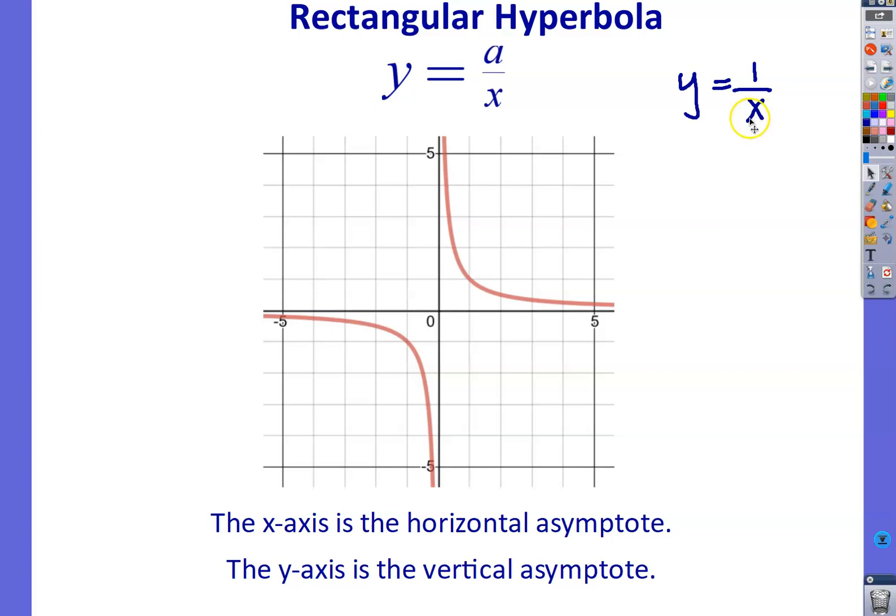Let's say that x equals a number like 1 fifth. Well, 1 divided by 1 fifth is 5. So when x equals 1 fifth, y equals 5. So as x gets closer to 0, y gets larger and larger. Once again, this graph will never actually touch the y-axis. So the vertical asymptote is the y-axis, or the equation of that, of course, is x equals 0.